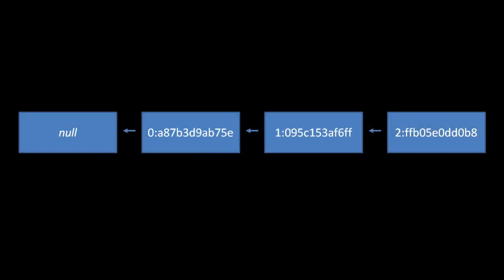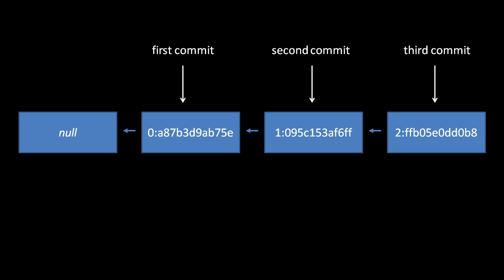Every change set in Mercurial has a parent, the only exception being the special null change set, which is an empty change set and the parent of the first commit. In this diagram, we're representing a repository where we've made three commits: the first with local revision 0 and a parent of null, the second with local revision 1 and a parent of revision 0, and the third with local revision 2 and revision 1 as its parent.